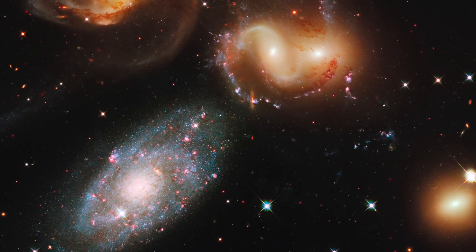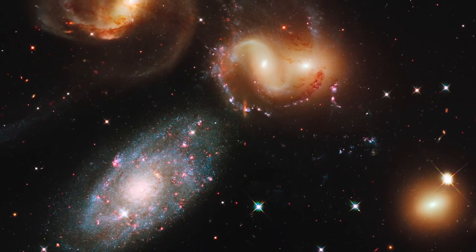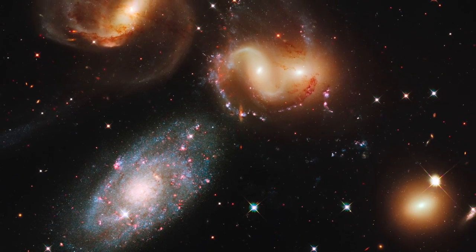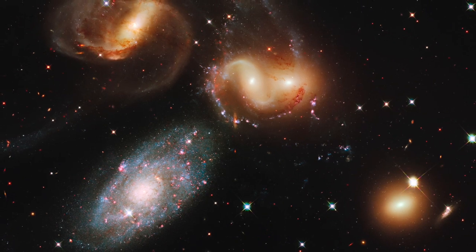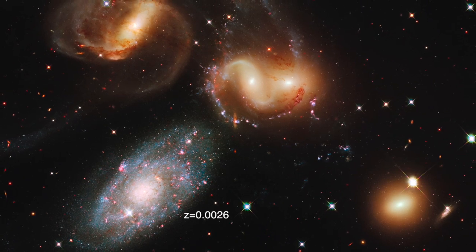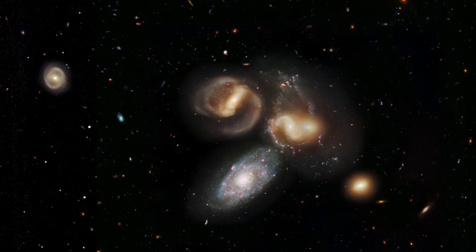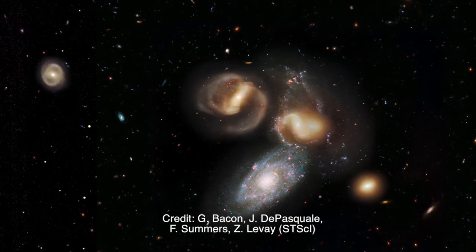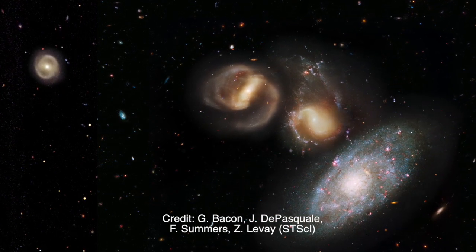The foreground galaxy on the bottom left is believed to be in the foreground solely because of the consensus belief that redshift is a measure of distance. The foreground galaxy has a redshift of Z equals 0.0026. The others range from Z equals 0.019 to Z equals 0.0225. The consensual conclusion is that the foreground galaxy is 250 million light-years closer than the others.